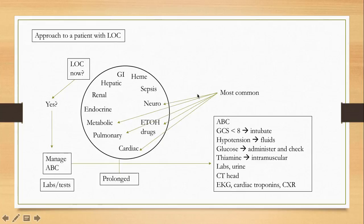Start looking at the Glasgow Coma Score and evaluate the patient right away. If the score is low, you will intubate. If the patient is hypotensive, give fluids. If glucose is low, administer it. If you suspect alcohol intoxication, give thiamine. Draw labs, urine tests, CT scan of the head, EKG, troponin, and chest X-ray — the whole battery of tests — because you are trying to revive the patient, not necessarily take a history.